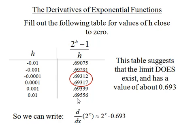So the derivative of 2 to the x is 2 to the x times 0.693. So it's 2 to the x times a constant. The question is, can we find a general rule to always find that constant?